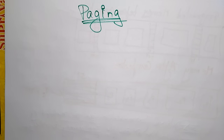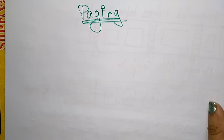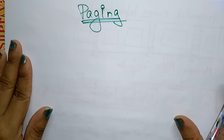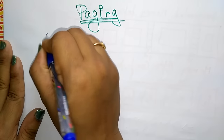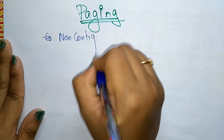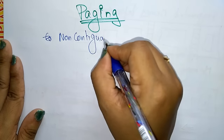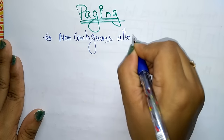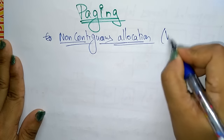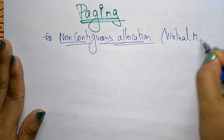Coming to the next topic in operating system: paging. In the memory organization of an operating system, paging is one concept of non-contiguous allocation. Non-contiguous allocation is also called virtual memory.